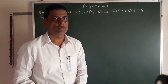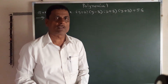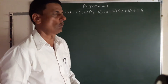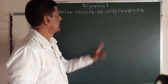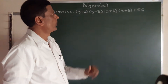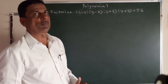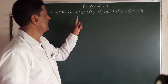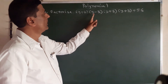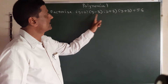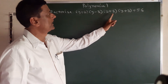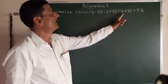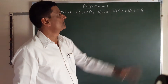Welcome to Thilipti Buddha sir only mathematics channel. Today we will see how to factorize a polynomial. One example of factorization will be: (y+2)(y-3)(y+8)(y+3) + 56.